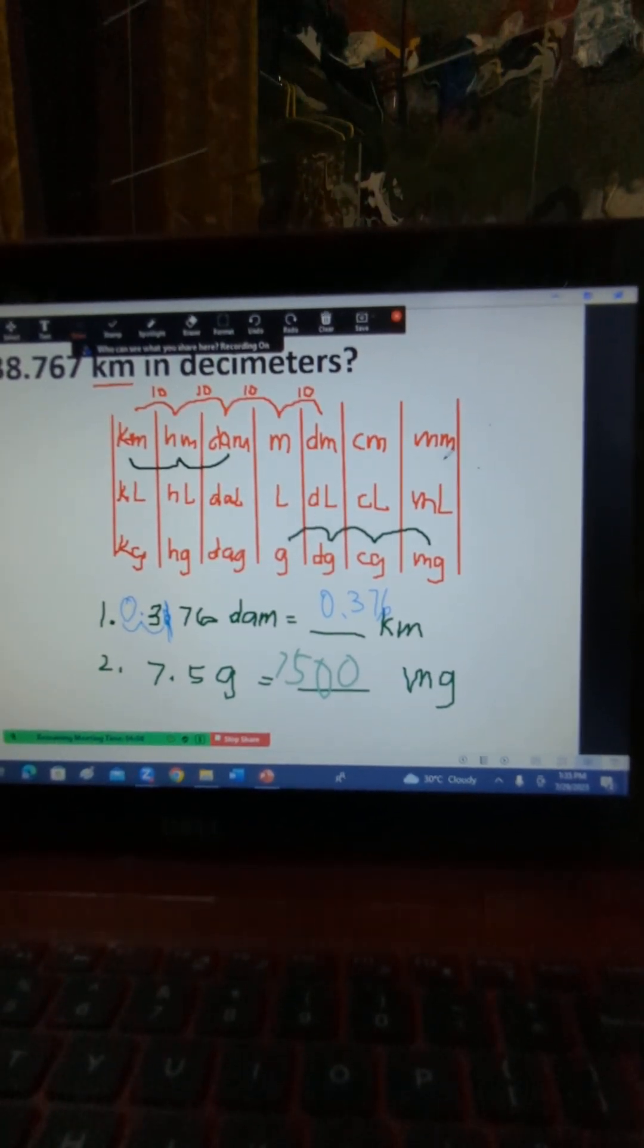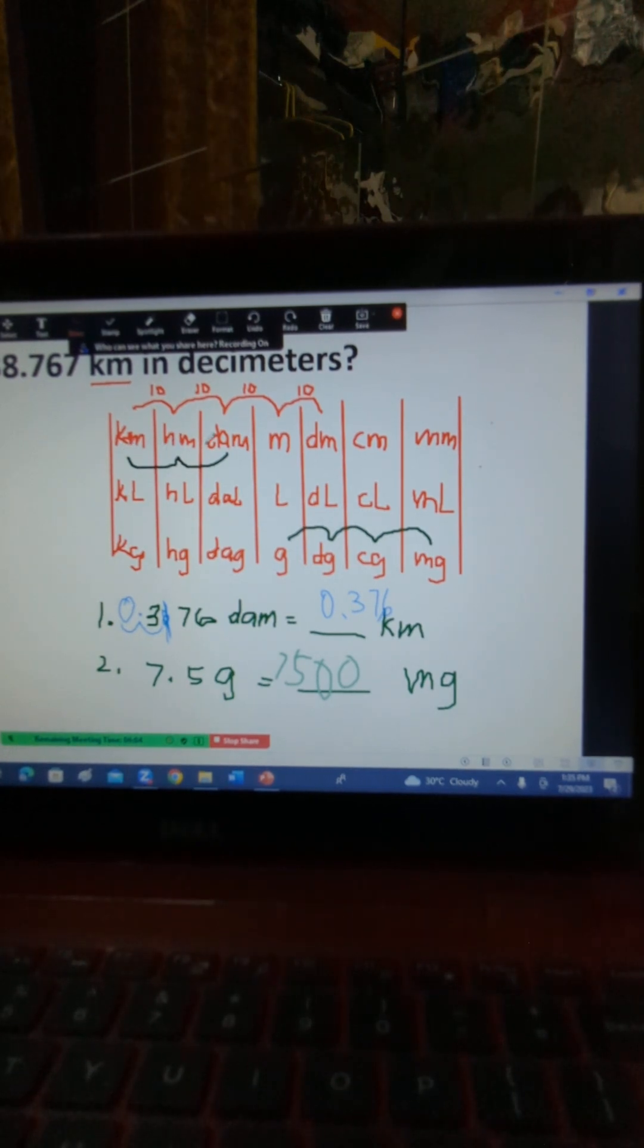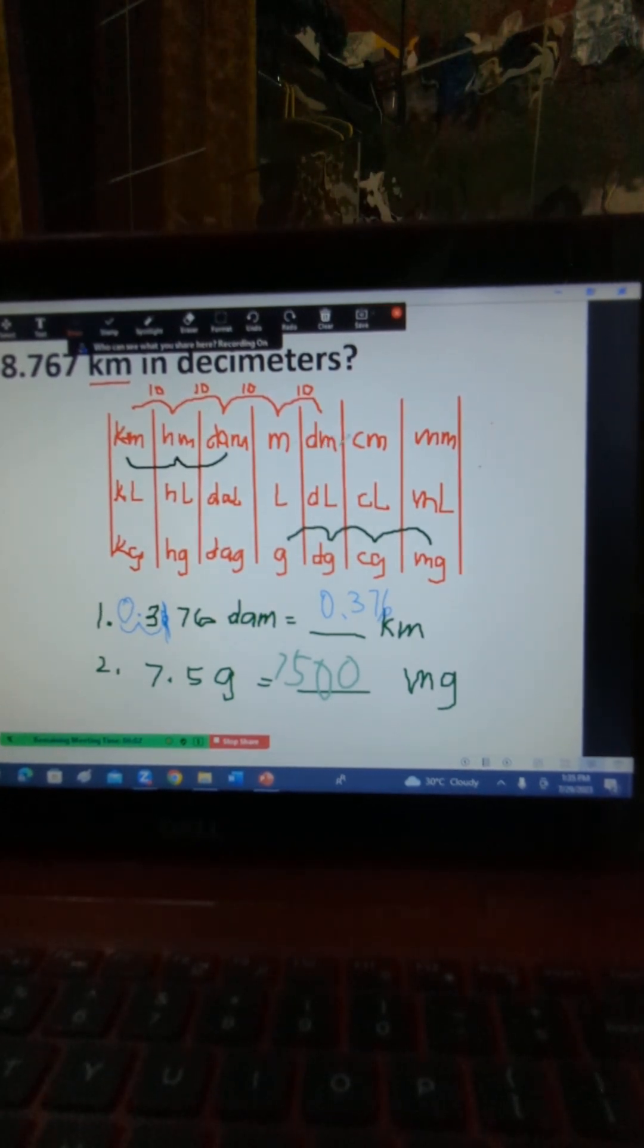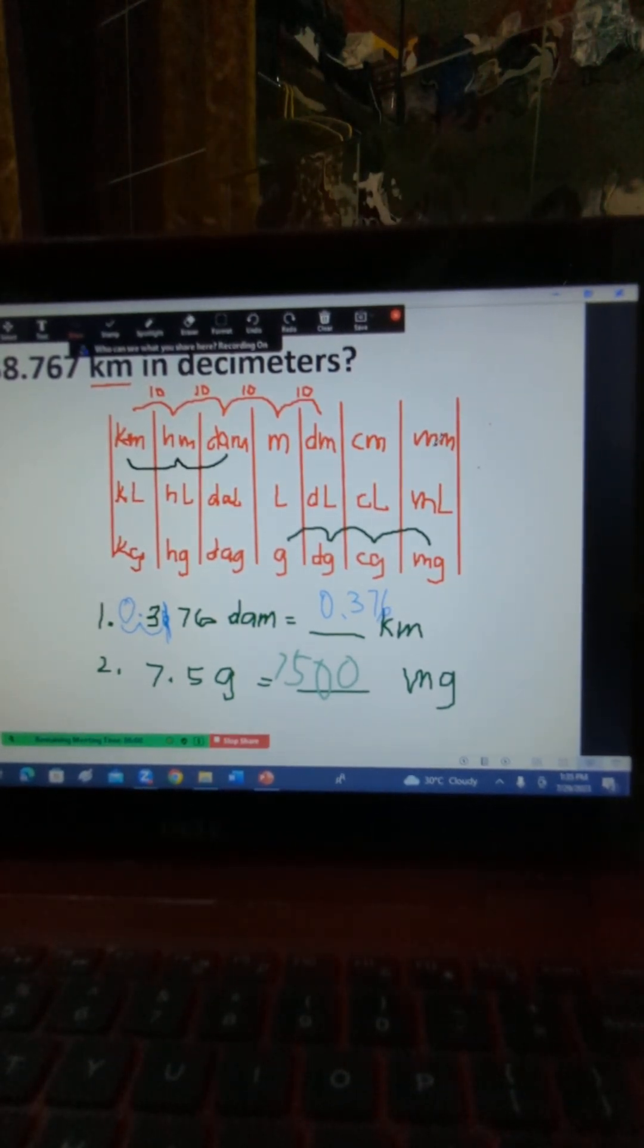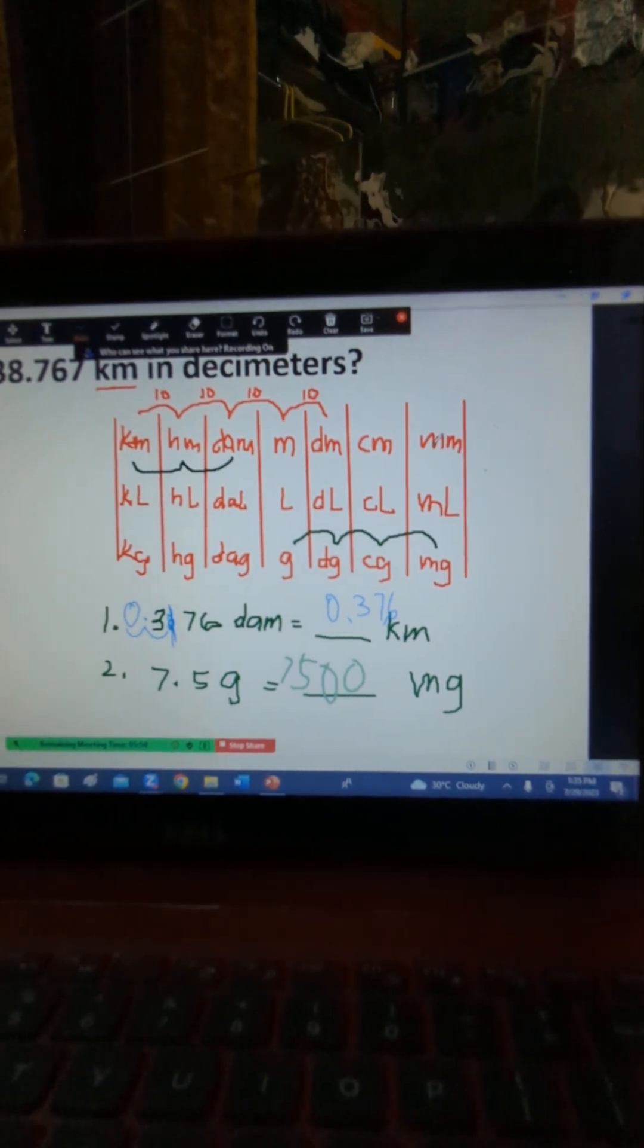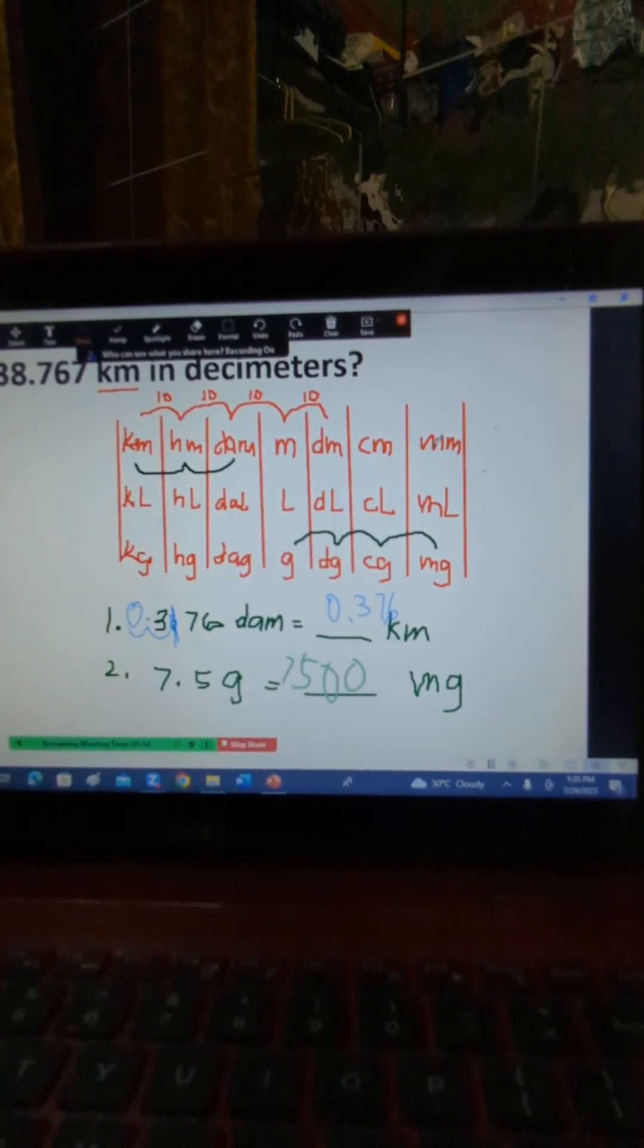Did you copy the table? Then try to memorize this. K, M, H, M, D, A, M, M, D, M, C, M, and then M, M. Okay, question with that. With this one. Nakuha?